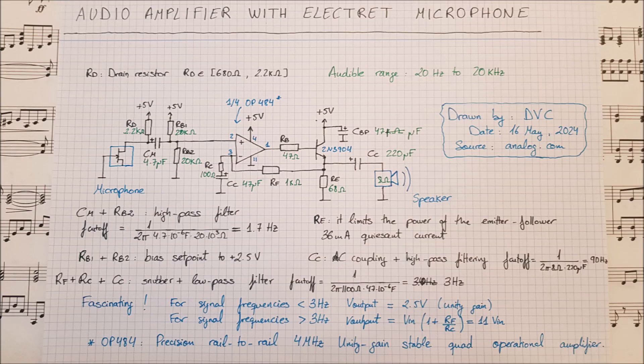Here is a nice little circuit that can take the output from a microphone, amplify it, and drive a speaker. The design is based on an example that you can find from the Analog Devices website from the video description down below. When working with this kind of circuit, you have to think that you are working with an audible range, and we can only hear sounds whose frequencies are from 20 Hz to 20 kHz. This is the bandwidth that we are working with.